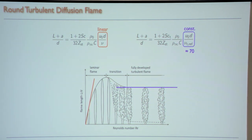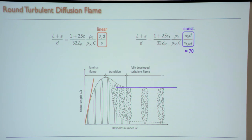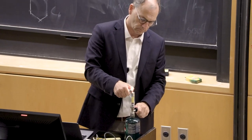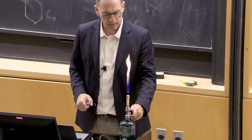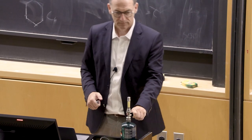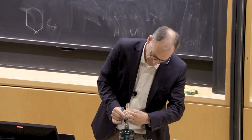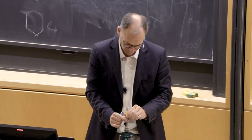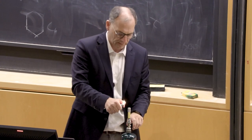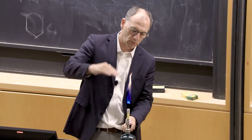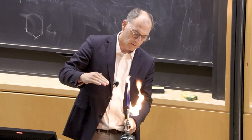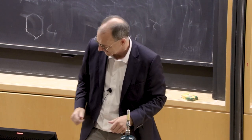For constant nozzle diameter, the Reynolds number doesn't matter — I always get the same flame length. But if I make the nozzle twice as large, I get the flame length twice as large. This means you can really control your flame length. Let's try this out: here's the laminar flame, and I increase the Reynolds number — it gets longer and longer.